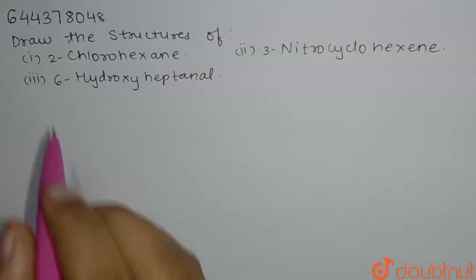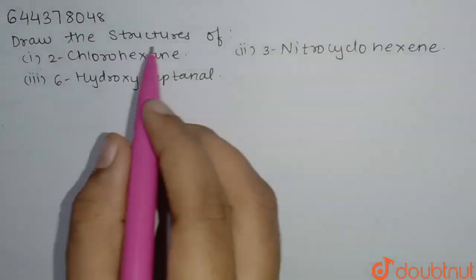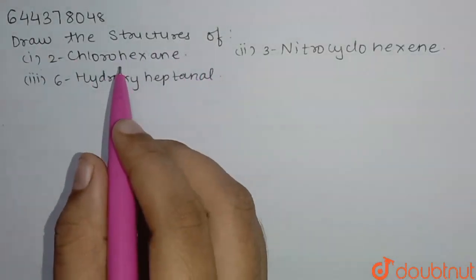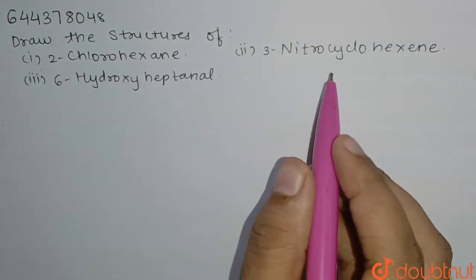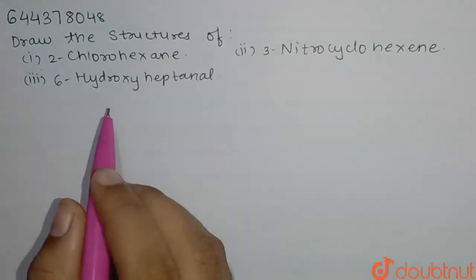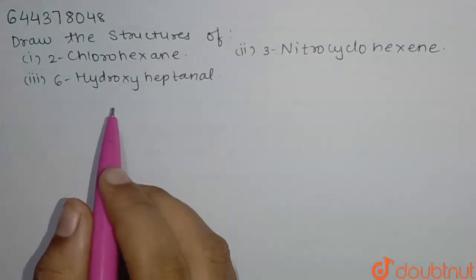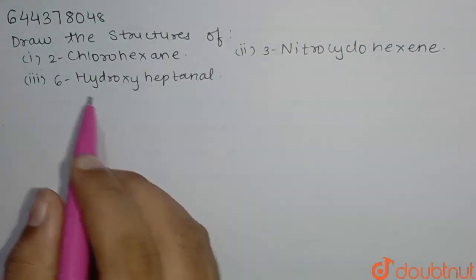Hello everyone. The question is: draw the structure of 2-chlorohexane, 3-nitrocyclohexane, and 6-hydroxyheptanal.